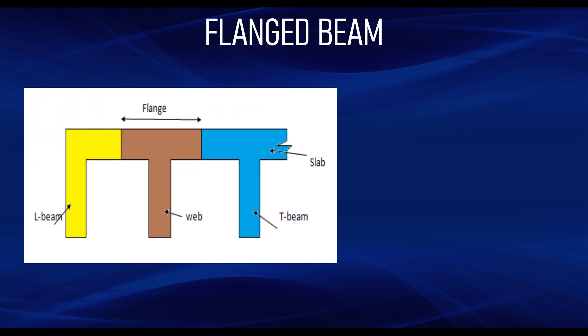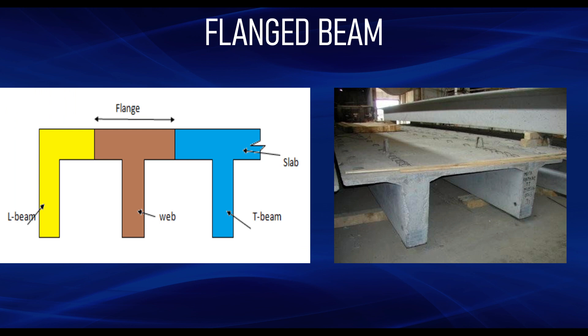We can also find some examples in precast members, just like the picture on the right-hand side. A flange beam has two parts: the web, which is the part below the slab, and the flange, which is the part of the slab that contributes to the beam. This flange width is important and needs to be calculated in order for us to be able to design the beam.